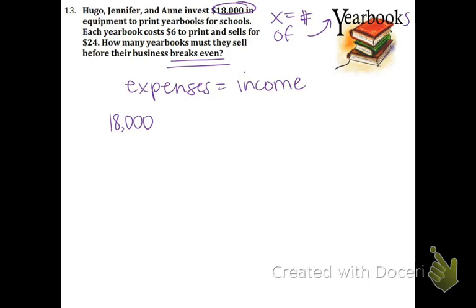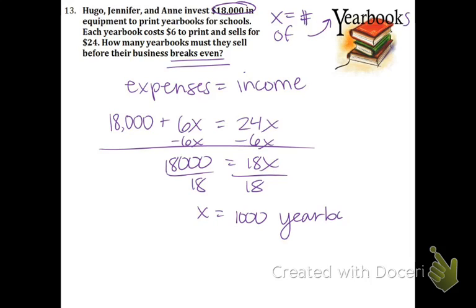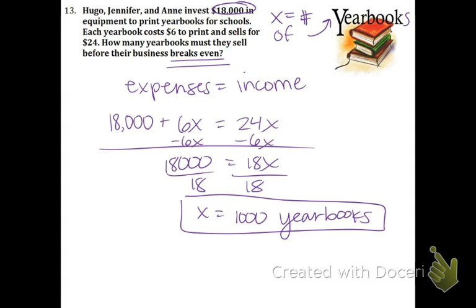Expenses means these people are actually paying money to fund their business. First of all, they're investing $18,000 in equipment, which is a hefty investment. And they're also paying $6 per yearbook to make — that's all the stuff they're spending. On the other side, income is what they're making, so that could be 24x. It's a basic equation: combine like terms by subtracting. 18,000 equals 18x. Divide both sides by 18, and we find out that x equals 1,000 yearbooks. So that is the number of yearbooks they must sell to break even. But if they actually wanted to make some money, they would have to sell more than 1,000.